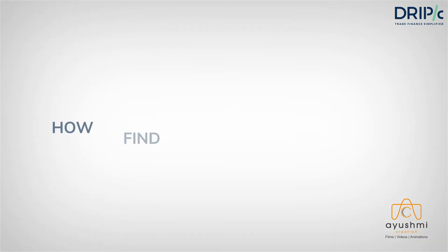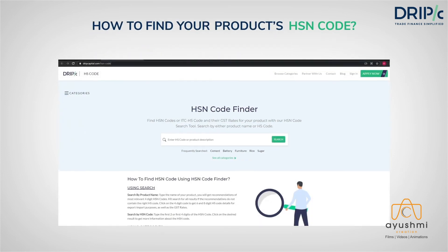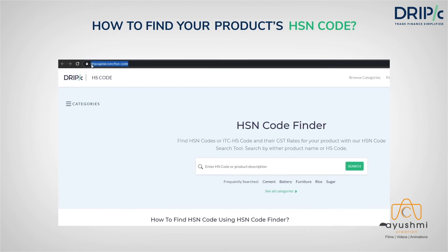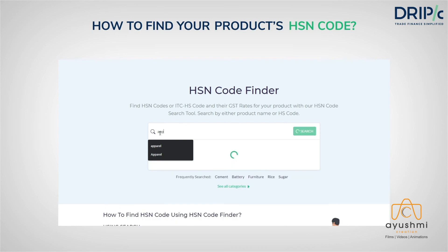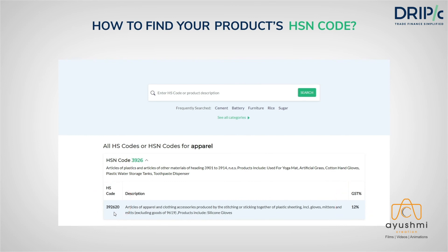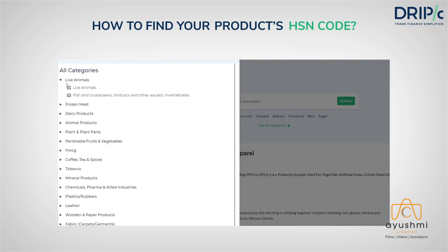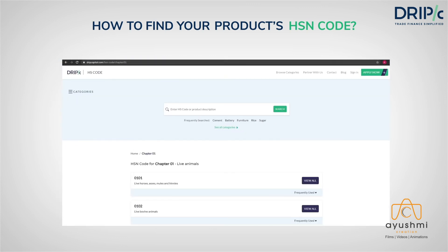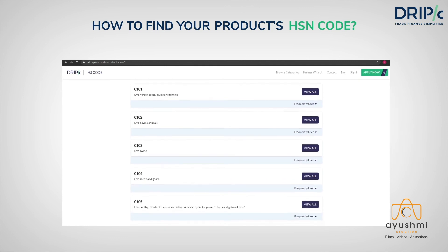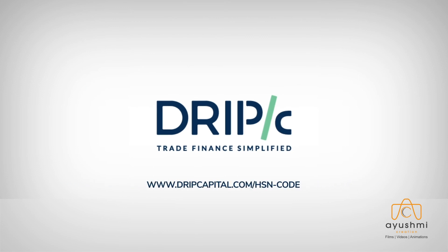How to find your product's HSN code? To find your HSN code, you can use a tool like DripCapital's HSN code finder, where you can search by product name. For example, we search for the product 'apparel' and find out the resulting HS codes and the GST rates. You can also identify the HSN code by navigating with the help of product categories, which will lead you to your product's HSN code. To further understand how HSN codes are used and to find your product's HSN code, visit www.dripcapital.com/hsn-code. The link is also mentioned in the description.